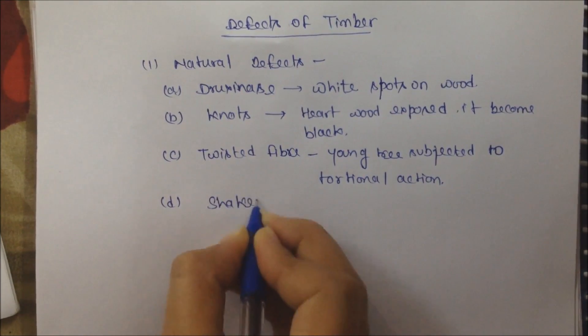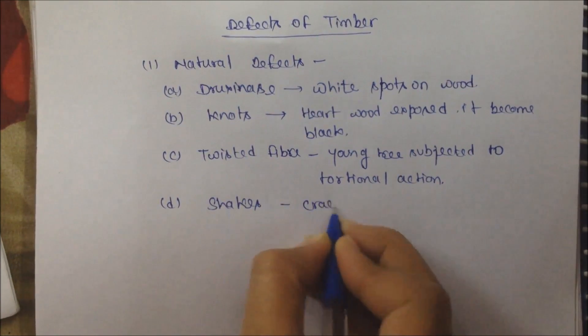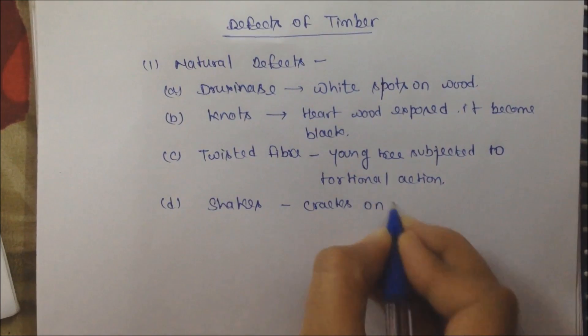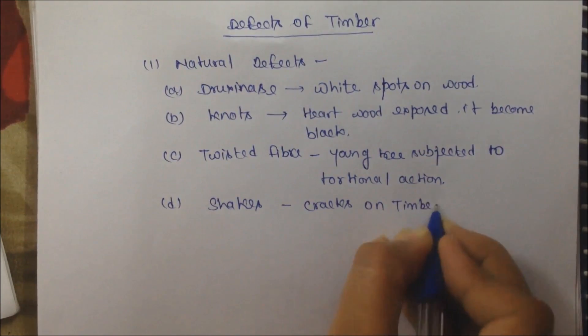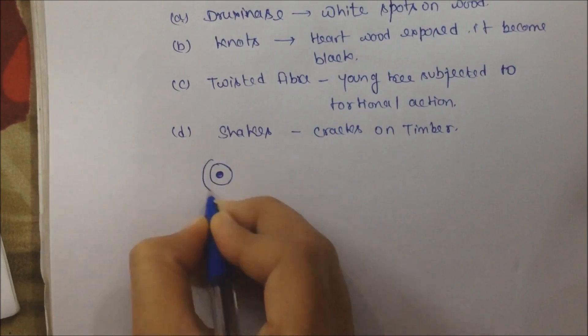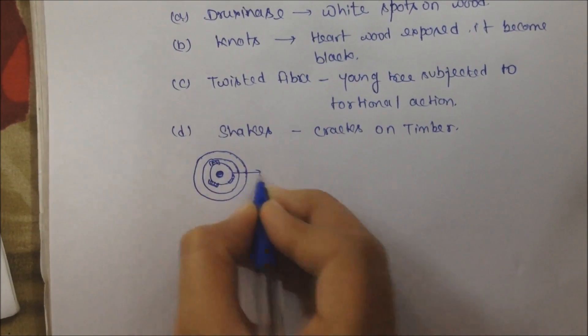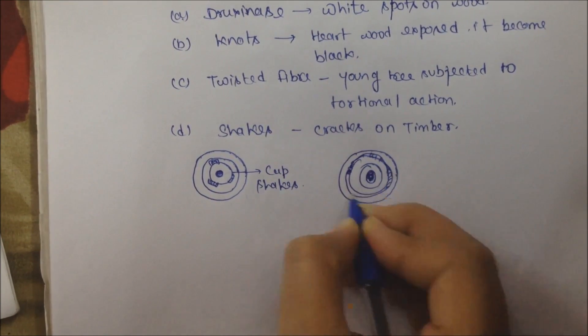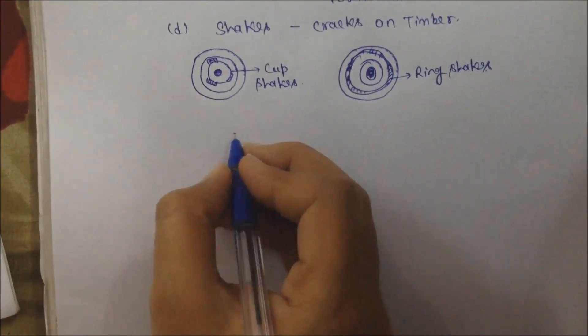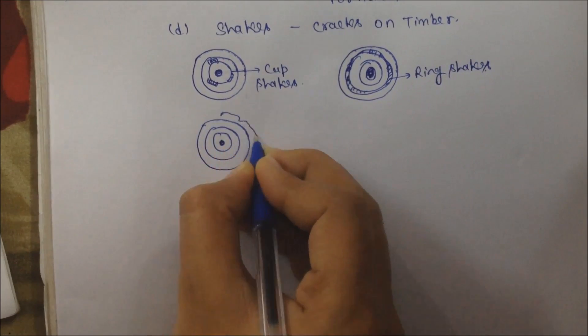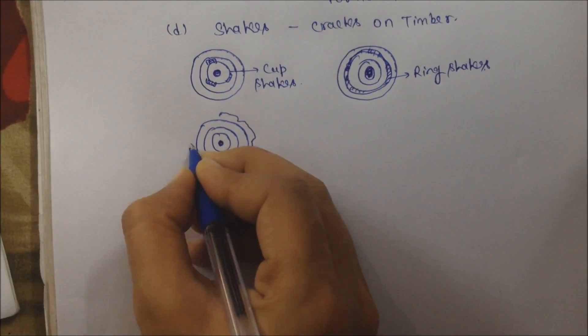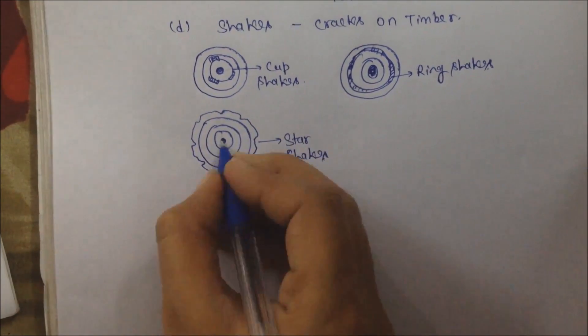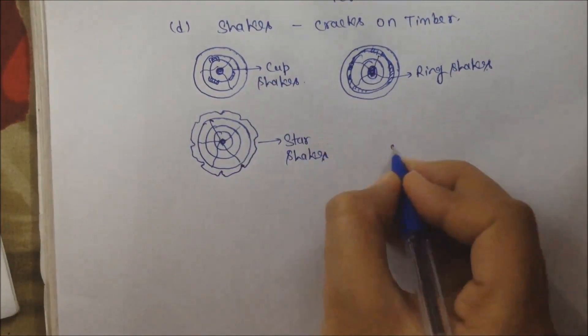Fourth is Shakes. Development of cracks on timber is called Shakes. These are of different types: first is Cup Shakes, second is Ring Shakes, third is Star Shakes, and fourth is Heart Shakes.